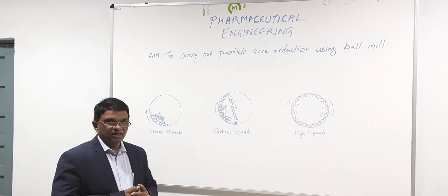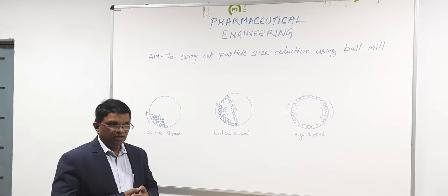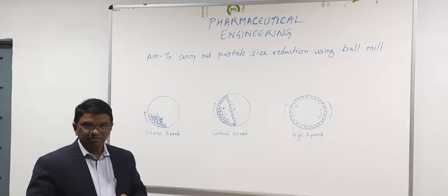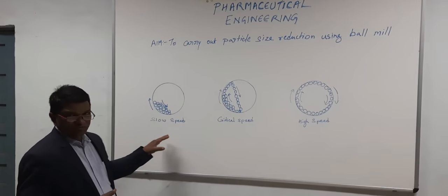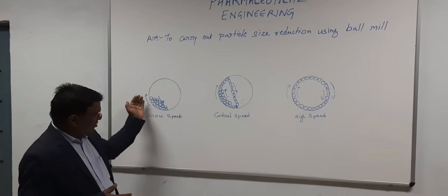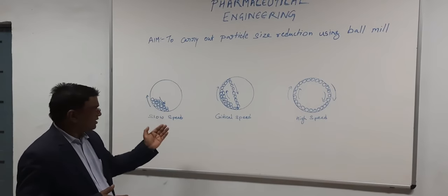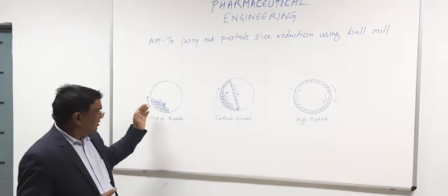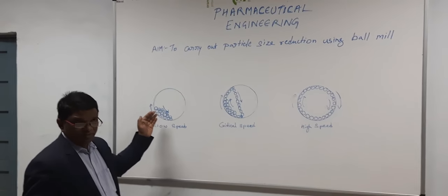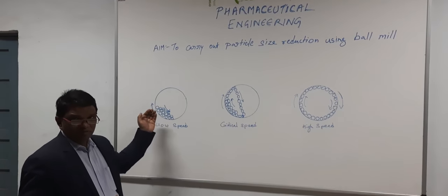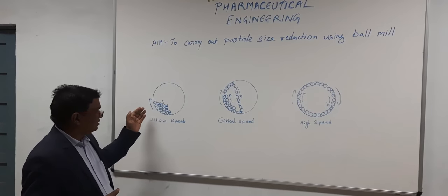We use different sizes of balls in the ball mill. The speed of the ball also plays a very important role. When we talk about slow speed, the ball will rise to a certain height and then slide down. So here, particle size reduction will not be effective because only the attrition process is taking place.